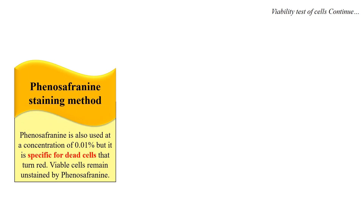The next method of viability is the phenosafranine method. Phenosafranine again stains the dead cells — this dye is specific for dead cells and the dead cells turn red with phenosafranine. The viable or living cells remain unstained by the phenosafranine.